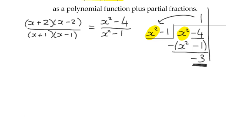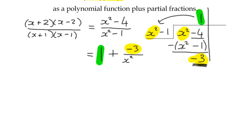So we can say that x² - 4 divided by x² - 1 equals 1, which is our quotient, plus our remainder. Our remainder is the negative number -3, and we're dividing that by the original denominator x² - 1. So we have 1 + (-3)/(x² - 1).